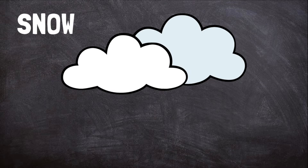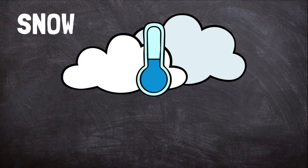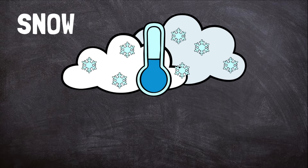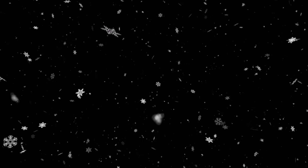Snow forms the same way as rain. However, to make snow, it must be very cold in the clouds — the temperature must be below freezing. When this happens, the water droplets in the clouds freeze into ice crystals that we call snowflakes. The snowflakes fall to the ground. Snowflakes can come in many different shapes and patterns.